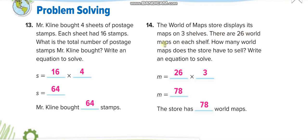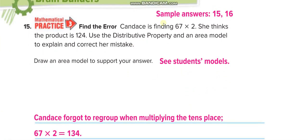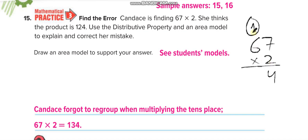3 times 26 equals 78, so there are 78 world maps. Next, Candice is finding 67 times 2 and thinks the product is 124. Let's find out if she's correct. Using the area model or directly: 2 times 7 equals 14, write 4 and carry 1; 2 times 6 equals 12, plus 1 equals 13. So the answer is 134, not 124. She forgot to regroup — she forgot to add the carried 1 when multiplying the tens digit.